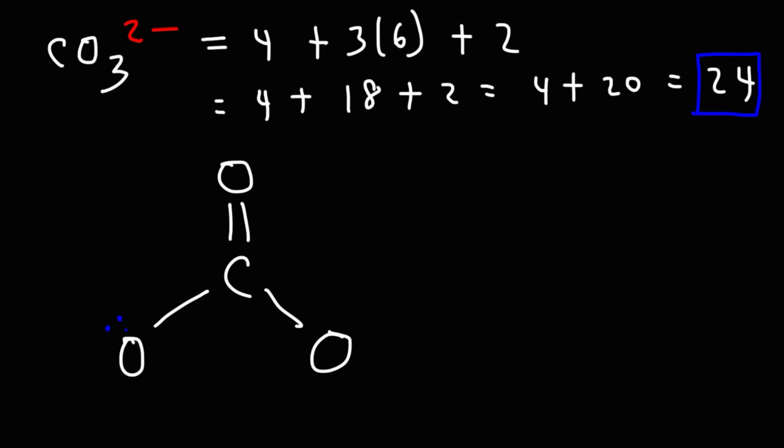Now when oxygen has 1 bond, it's going to have 3 lone pairs and a negative charge. Whenever oxygen has 2 bonds, it's going to be neutral, but it's going to have 2 lone pairs. So this is the Lewis structure of the carbonate ion. If you want to, you can enclose it in brackets.